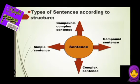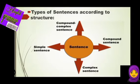So we can say the verb is the heart of a sentence. Types of sentences according to structure: we have four types — simple sentence, complex sentence, compound sentence, and compound-complex sentence or complex-compound sentence.